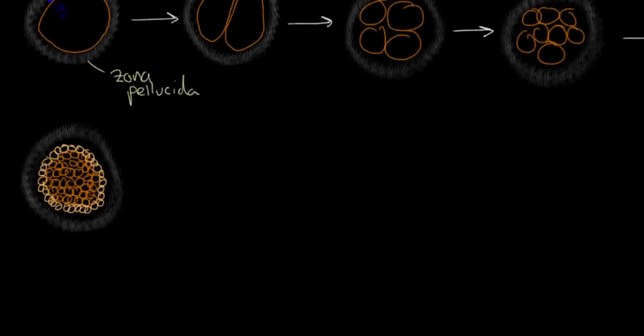So here we have two separate populations of cells. The ones on the outside we'll call trophoblasts, and this mass of cells on the inside we'll call embryoblasts. And so you're going to continue with your process.